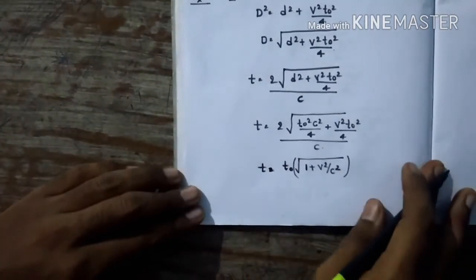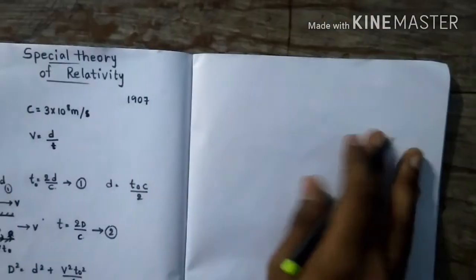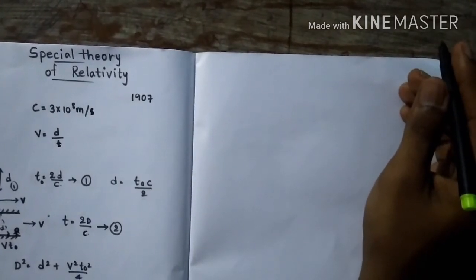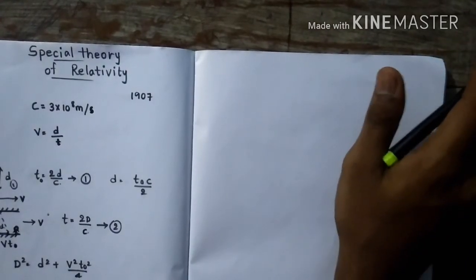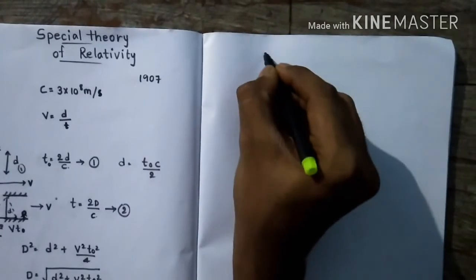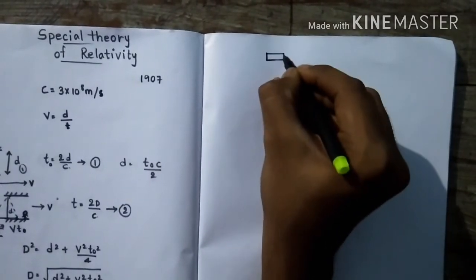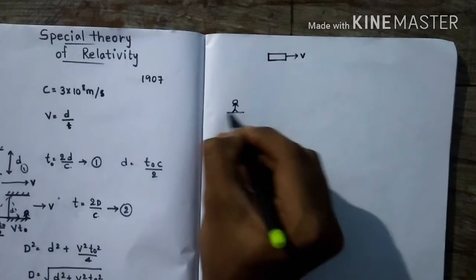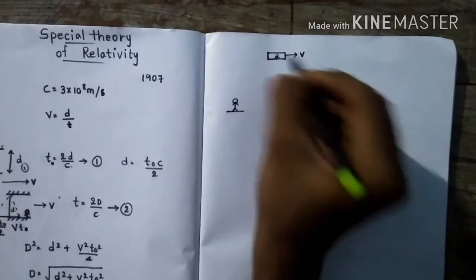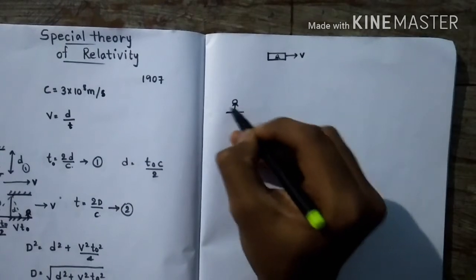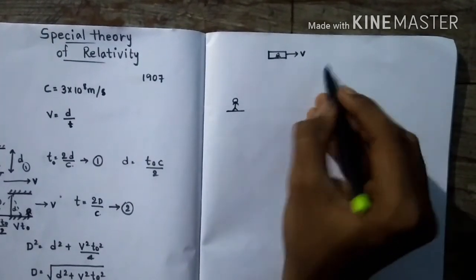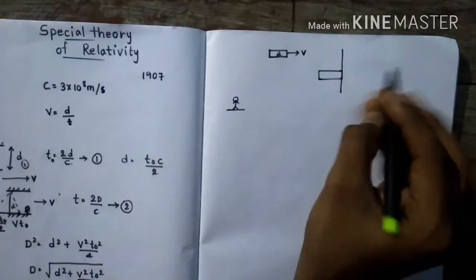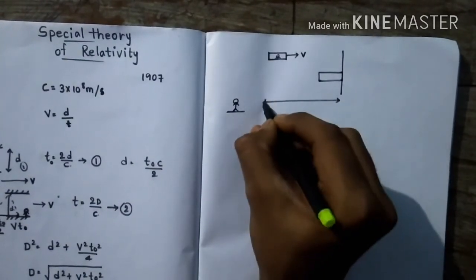Now let's get into length contraction. When explaining length contraction, most people use Lorentz transformations, which is a bit difficult to understand, but I'll make it easy. Let's say there's a spaceship moving with velocity v, and there's a person observing from the ground frame. After a certain time, the front of the spaceship has traveled a distance d. Let's call this small d.